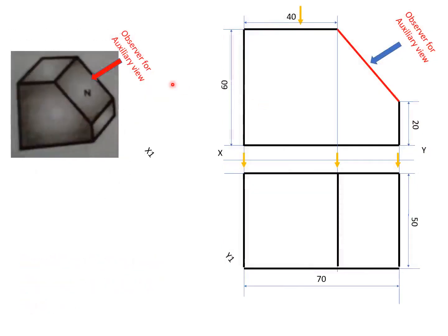As defined, an auxiliary view is the view of the irregular surface — or we can say, the view of an inclined surface. Here we have drawn a front view and top view of the object shown. Now, how do we draw the auxiliary view, that is, the view of this inclined surface?